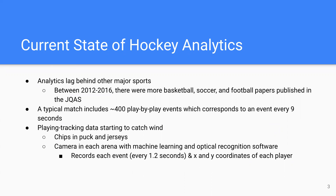In hockey, much like basketball, a typical match can include over 400 play-by-play events, corresponding to something happening every nine seconds. Over the past few years, there's been a move towards player tracking data. They've put chips inside the puck and inside jerseys, so fans can see how fast a shot was or how long a shift was for a player, while coaches can use the analytics to see how long players were on the ice during a game.